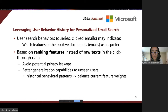In contrast to using raw text in click-through data, as most context-aware models do, we construct the context based on numerical ranking features instead. In this way, potential privacy leakage is avoided, and the model could have better generalization ability to unseen users.